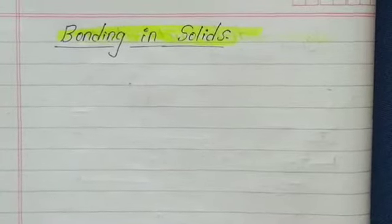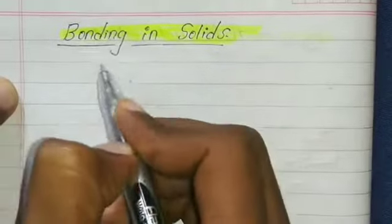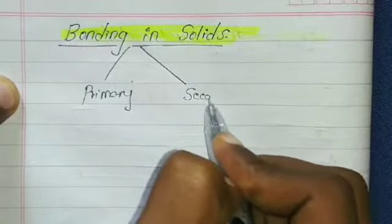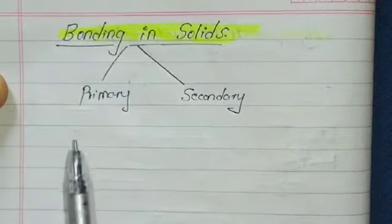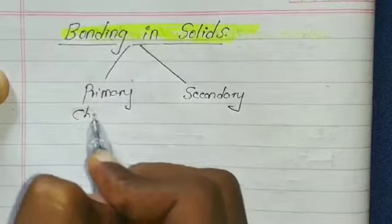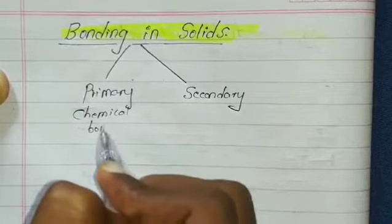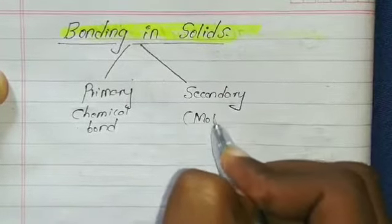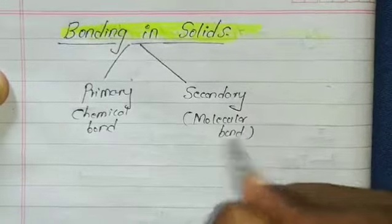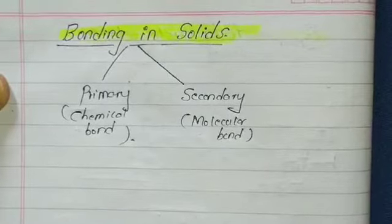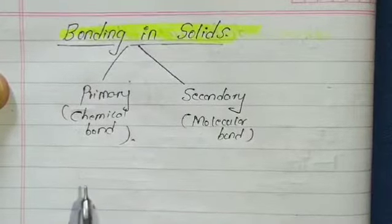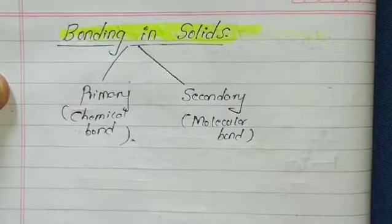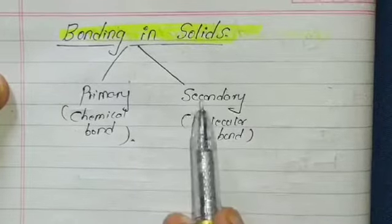In bonds, there are mainly two types: the primary bond and the secondary bond. The primary bond is also called the chemical bond. The secondary bond is the molecular bond. The primary or chemical bond is the strongest bond between atoms, while the secondary bond involves attractive Van der Waals forces, due to which secondary bonds are created.